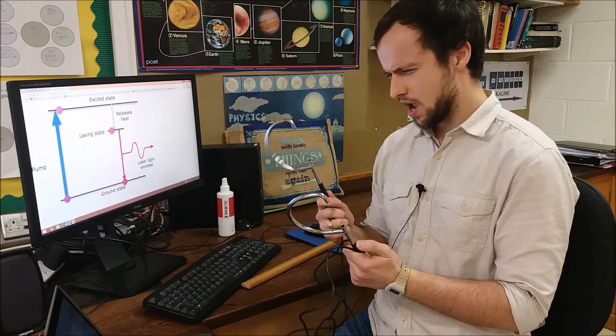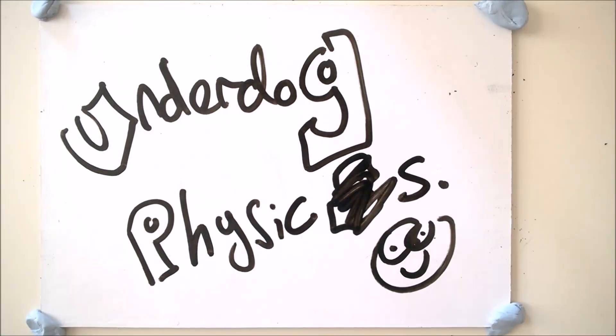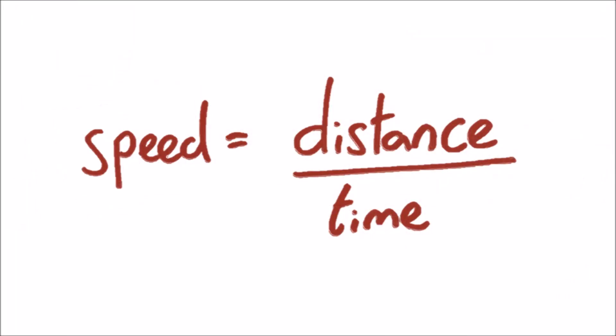Lightgates. Say whaaaaaaat? Hello and welcome to Underdog Physics. Today we'll be talking about how to use lightgates to measure the speed of an object. You will need this equation and to listen carefully.